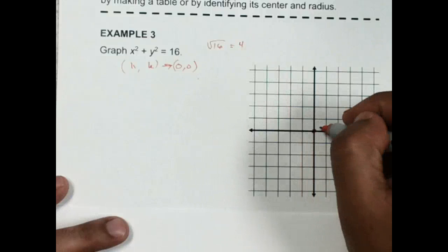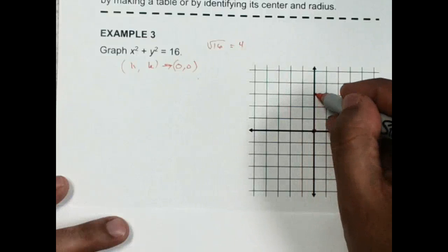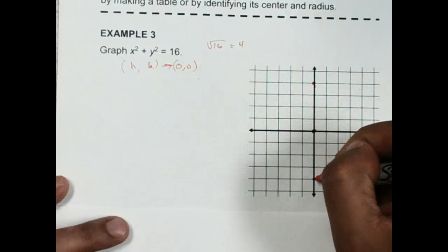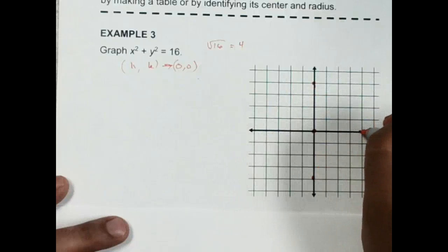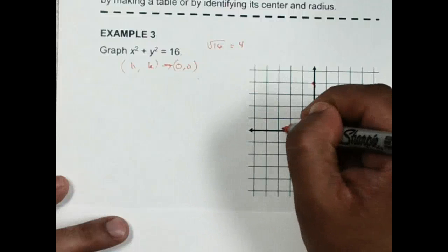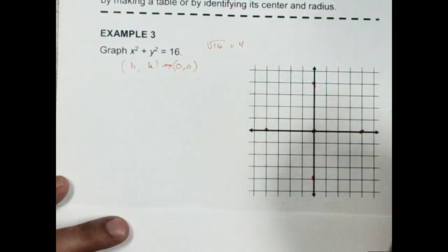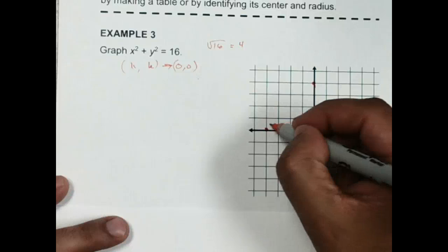So you're going to go from the center. You would go up 4, then you'd go down 4, to the right 4, and then left 4. And then you would connect this and make a circle.